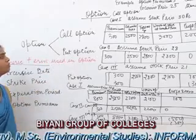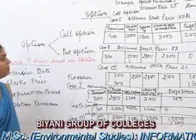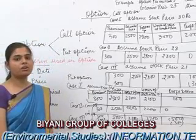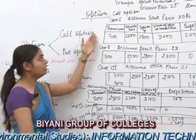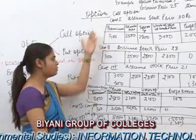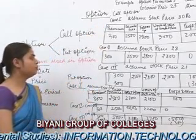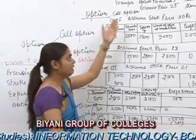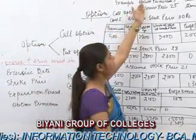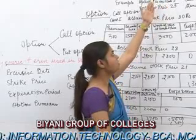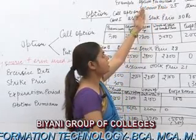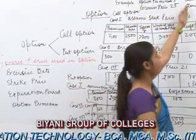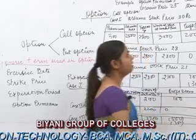Now we go to the call option and put option with case studies. We will study three case studies for the call option and three for the put option. For all cases, the numerical values are the same: option premium is ₹3, exercise price is ₹25, and each contract stands for 100 shares.